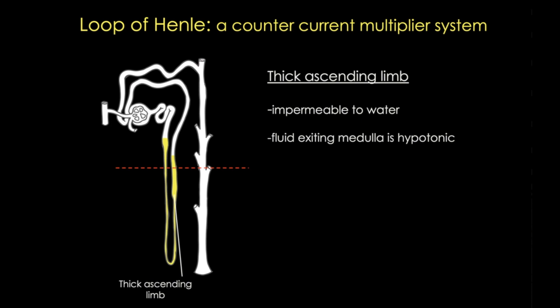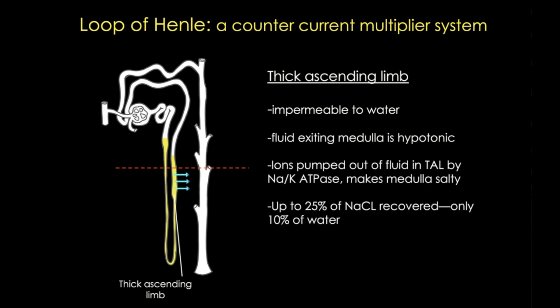The fluid that exits the medulla is hypotonic. The cuboidal cells of the thick ascending limb actively transport sodium and chloride out of the tubule against their concentration gradients into the interstitium, making it hypertonic. That causes water to move out of the thin descending limb, concentrating the urine. Meanwhile, the thin ascending limb will absorb sodium chloride but not water. This is the countercurrent flow, and it establishes a gradient of osmolarity in the medulla interstitium that multiplies the deeper we go into Henle's loop.